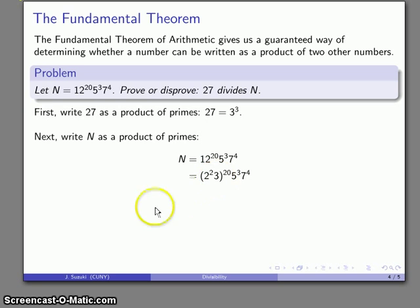Expanding this out, that's 2 to the 40th, 3 to the 20th, 5 to the 3rd, 7 to the 4th. So the recipe for making this number N: take 40 twos, 20 threes, 3 fives, 4 sevens, multiply them all together, and that's how you get N.